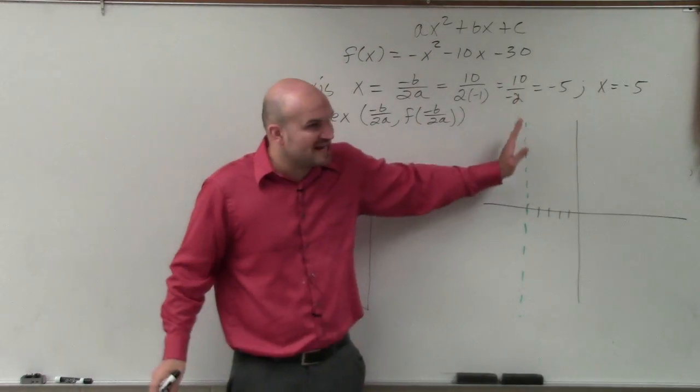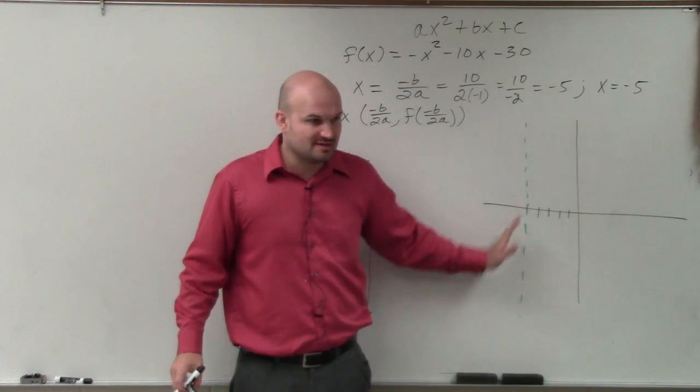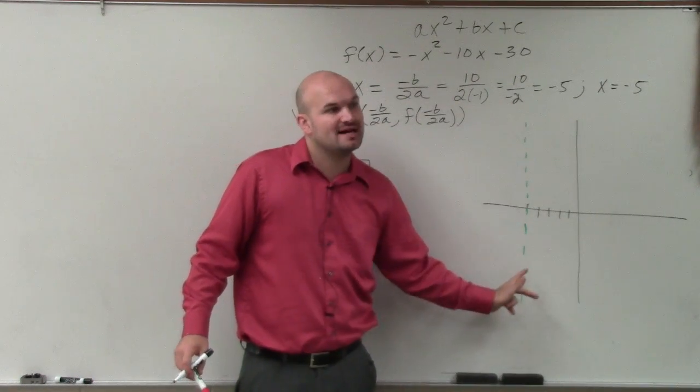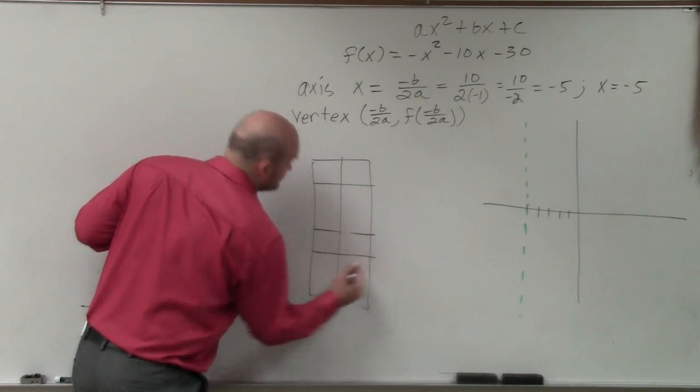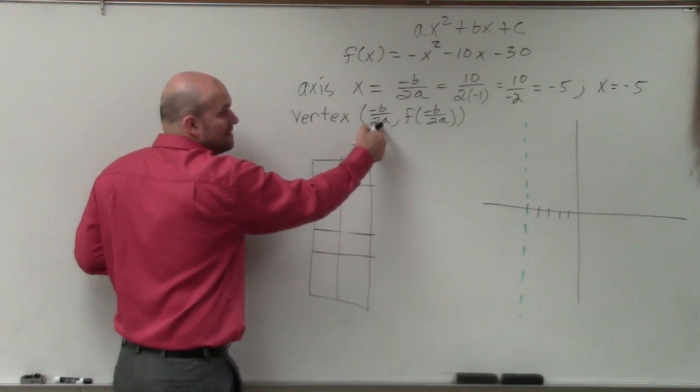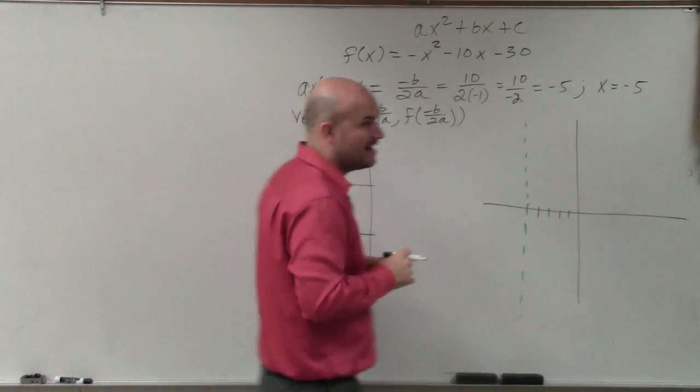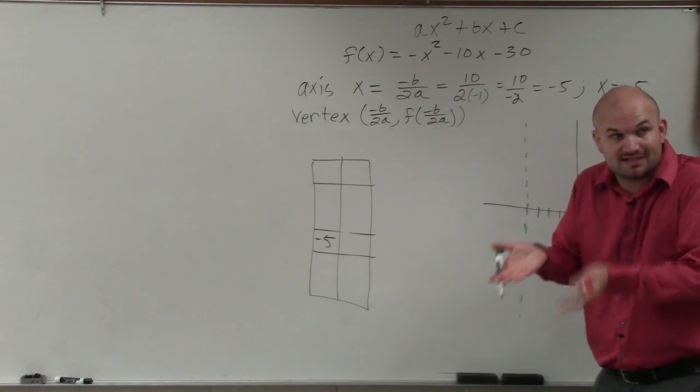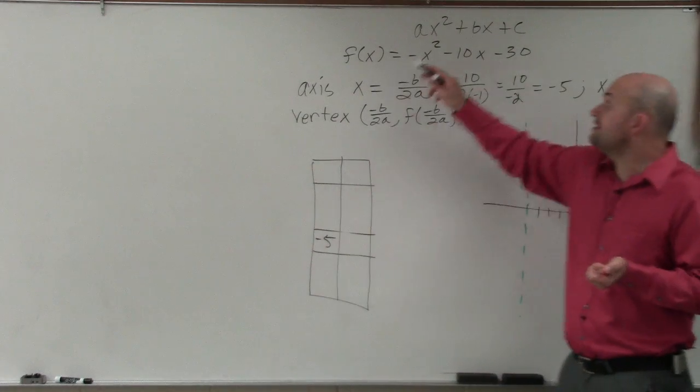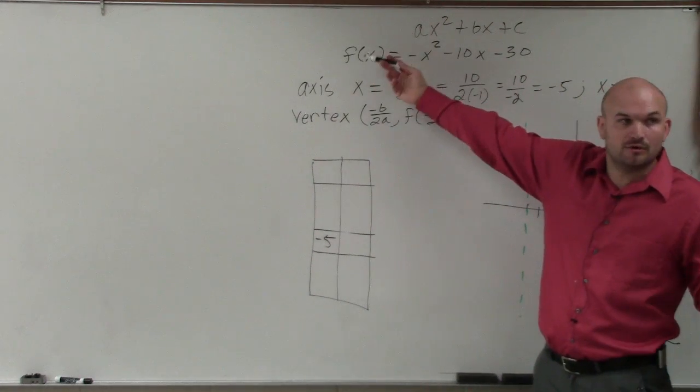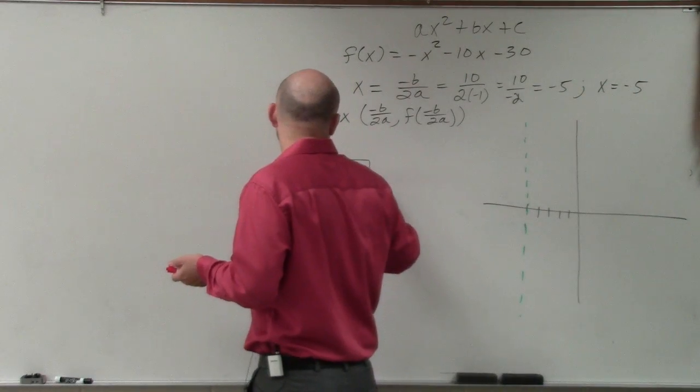Remember that the vertex lies on the axis of symmetry. Always. Every single time you guys are graphing, the vertex was always on the axis of symmetry. So the vertex is a coordinate point, and the coordinate point has the same x value as your axis of symmetry. So it's negative 5. So if I know the x value of the vertex, and I need to find the y value, all I simply need to do is plug negative 5 in for x to find the output value, or f(x).